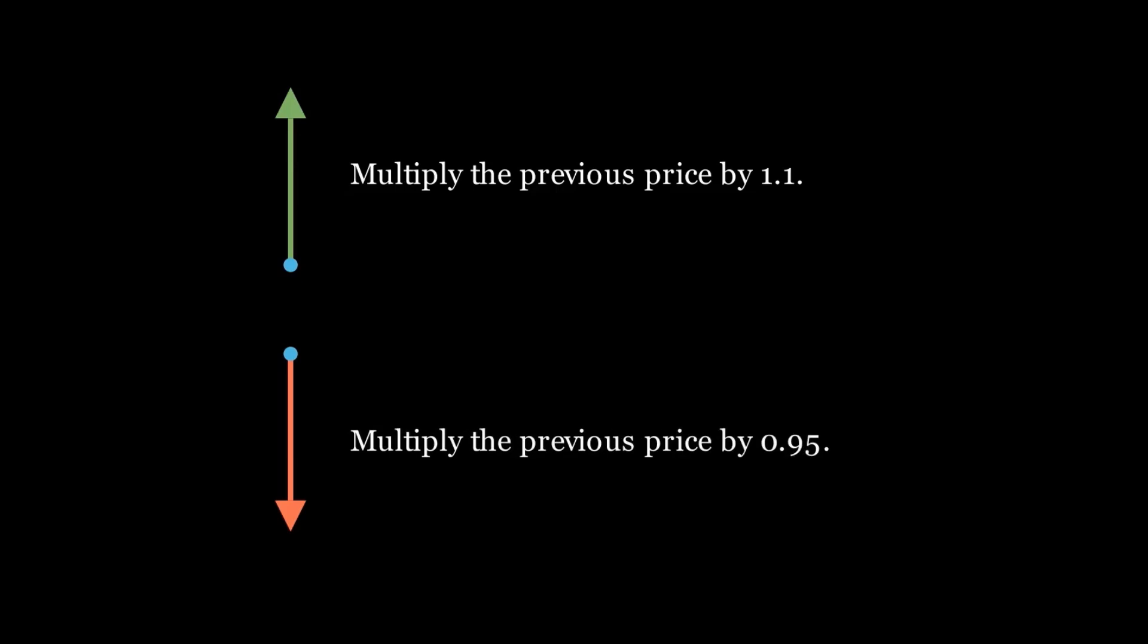Let's look at the solution. Every day the price can increase by 10% or decrease by 5%. If it increases, we multiply the previous price by 1.1 to get the current price. If it decreases, we multiply the previous price by 0.95 to get the current price. So every day we multiply the previous price by a factor which can either be 1.1 or 0.95.